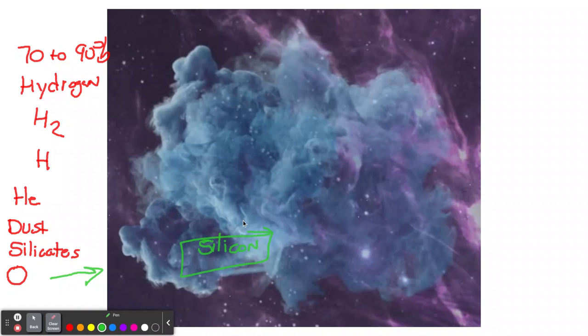And also carbon, right? Because we are carbon-based life forms. Anything with organic chemistry would have carbon in it. So this cloud, where did it come from? Let's look at this.